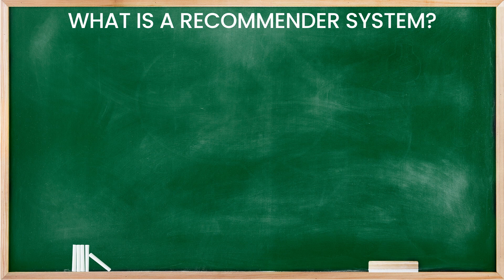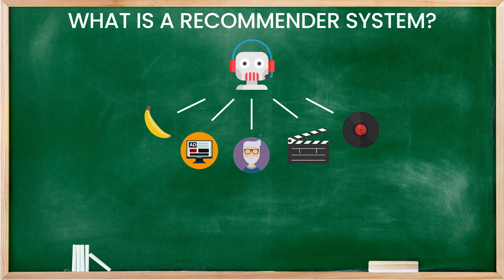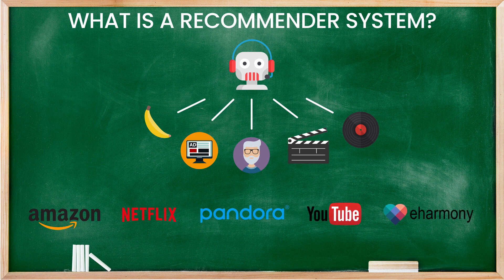So what really is a recommender system? A recommender system is really an automated system to filter some entities. These entities can be any products, ads, people, movies, or songs, and we see this from all over on a daily basis — from Amazon to Netflix to Pandora to YouTube to eHarmony.